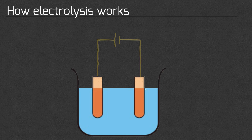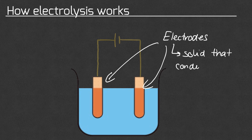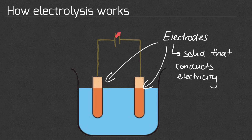We are now going to look at how electrolysis works. You will do a practical as part of the course, but this is a simple diagram showing what the electrolysis equipment looks like. The key feature of electrolysis are these two electrodes. They are a solid which can conduct electricity, so once connected up to a battery they allow an electrical current to pass from the battery through the electrodes, through the electrolyte, back up the electrodes to complete the circuit.